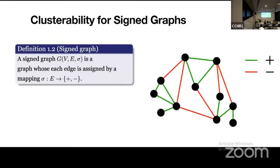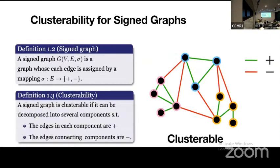So, what is a sign graph? A sign graph is a graph where each edge is assigned positive or negative. As we can see from this figure, we use the green line to indicate the positive edge and the red line to indicate the negative one.